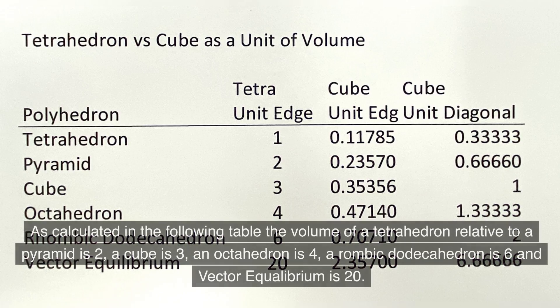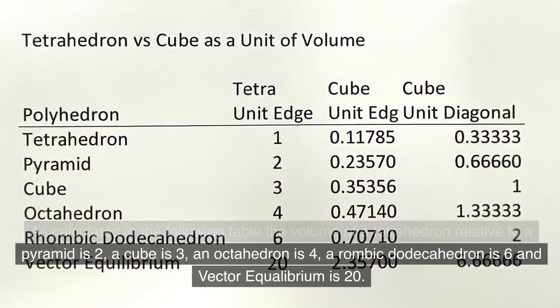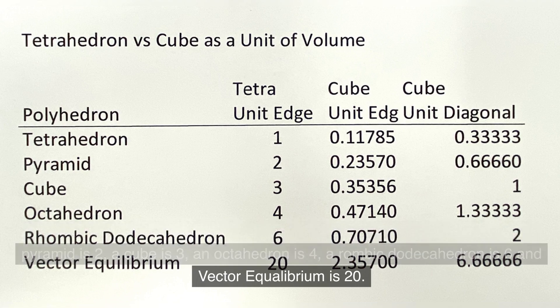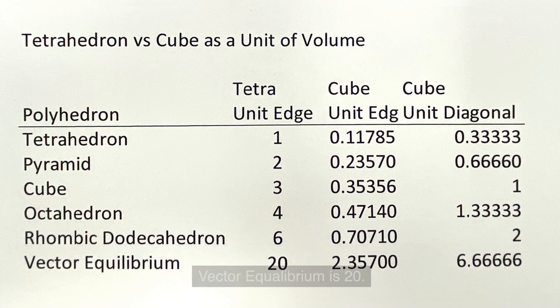As calculated in the following table, the volume of a tetrahedron relative to a pyramid is 2, a cube is 3, an octahedron is 4, a rhombic dodecahedron is 6, and vector equilibrium is 20.